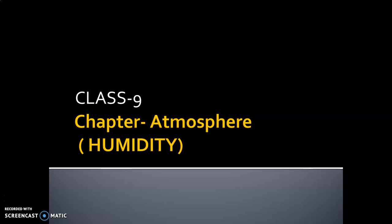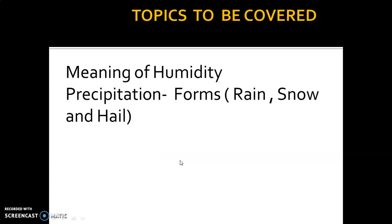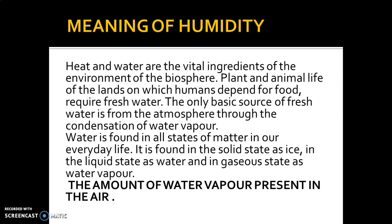Good morning students, let's start with a new topic: humidity. In this video I am going to explain what is humidity, what is precipitation, and different forms of precipitation such as rain, snow, and hail. Heat and water are the vital, meaning important, part of the environment. Plant and animal life, on which humans depend for food, require fresh water. The only basic source of fresh water is from the atmosphere.